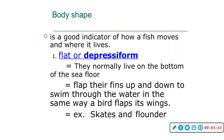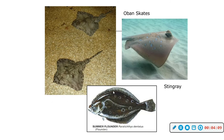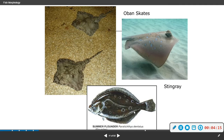Body shape is a good indicator of how a fish moves and where it lives. Flat or depressiform fish normally live on the bottom. They flap their fins up and down to swim through the water in the same way a bird flaps its wings. These would be your skates and your flounders — here you have a skate and this is a flounder; they're flat.